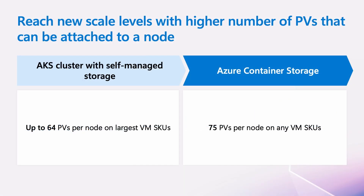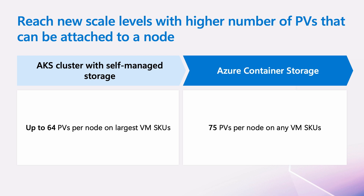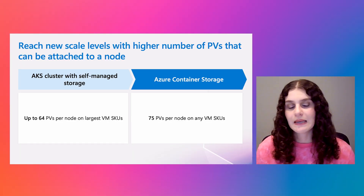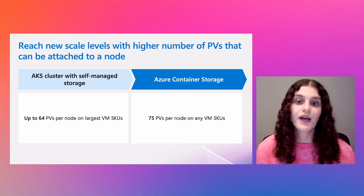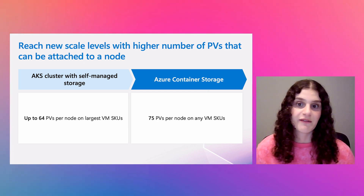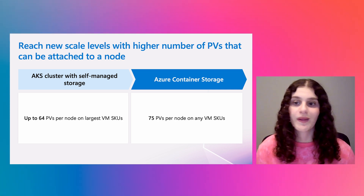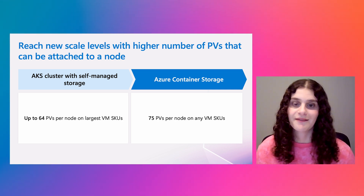Traditional VM-centric storage has limits on the number of disks you can attach to a VM based on the SKU caps, which translates to how many persistent volumes you can attach to one of your cluster nodes. Most likely you had to upgrade your VM to a higher SKU, which is more expensive, in order to get more PVs per node. Now with Azure Container Storage, because we are able to pack multiple PVs into one disk, you can attach up to 75 persistent volumes per cluster node without needing to go to the highest VM SKUs.